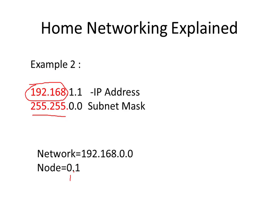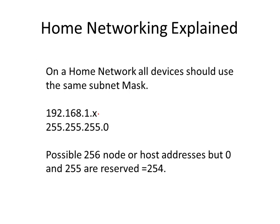There is a mistake in that slide. What's important to understand is that all devices on a home network should use the same subnet mask. Common on a home network is 255.255.255.0. With this subnet mask you can have a possible 256 nodes — 0 to 255 — but 0 and 255 are reserved, so you finish up with 254 usable addresses, which is enough for home networks in general.